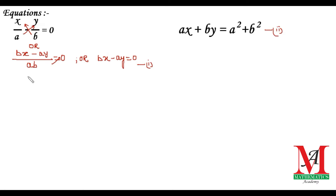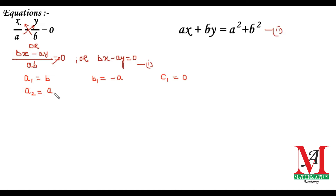For the cross multiplication method we need the coefficients: a1 is the coefficient of x in equation one, which is b; b1 is the coefficient of y in equation one, which is a; c1 is the constant, which is zero. Then a2 is the coefficient of x in equation two, which is a; b2 is the coefficient of y in equation two, which is b; and c2 is the constant in equation two, which is a² plus b².